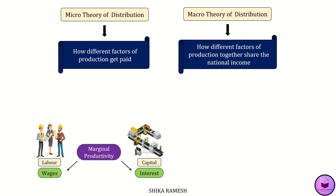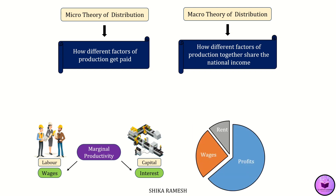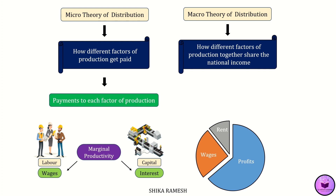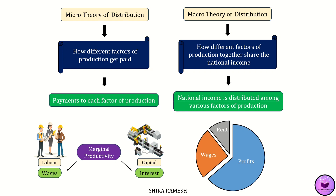On the other hand, the macro theory of distribution looks at the bigger picture. It's not just about individual factors but about how all these factors together share the total income of a country. For example, it helps us understand how much of the entire national income goes to workers as wages, to landowners as rent, and to entrepreneurs as profits. Macro distribution examines how national income is distributed among the various factors such as labor, land, and capital.